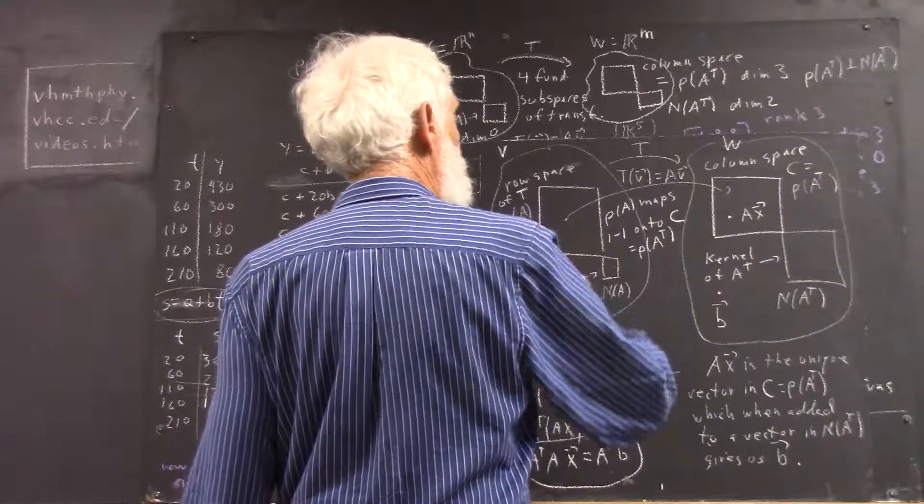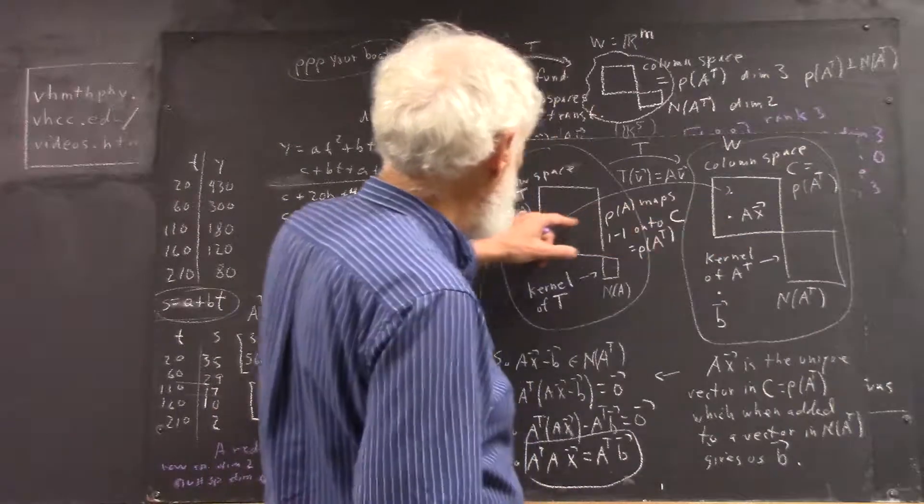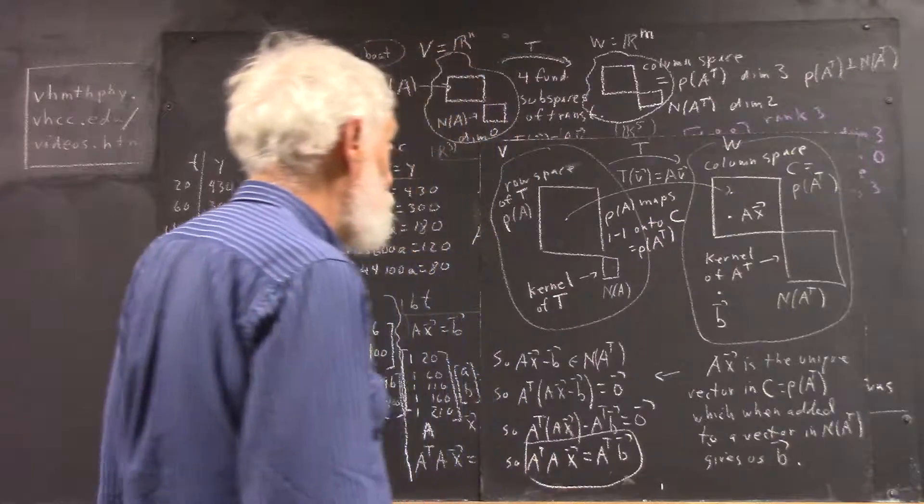For every vector in here, there's exactly one vector over here. And for every vector over here, there's exactly one vector over here that matches it. These two vectors are unique.